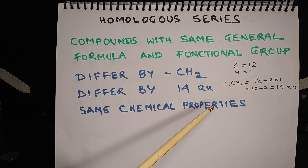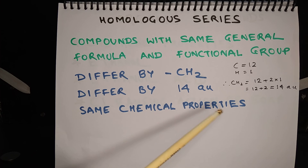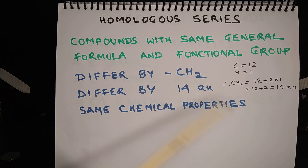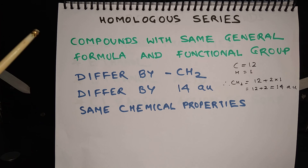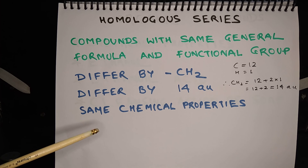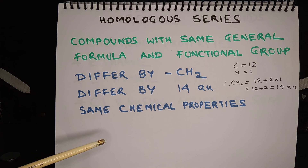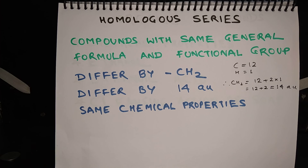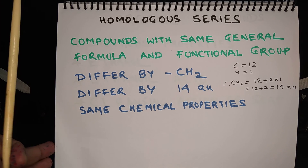You can calculate it yourself — find the difference between methane and ethane, it will be 14 AMU. The difference between ethane and propane will be 14. The difference between propane and butane will be 14. The members of a homologous series show the same chemical properties, but they show some difference in physical properties, which differ because of the increment of atomic mass in subsequent compounds.